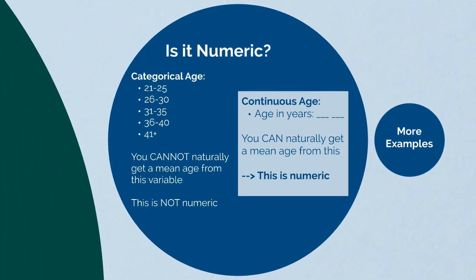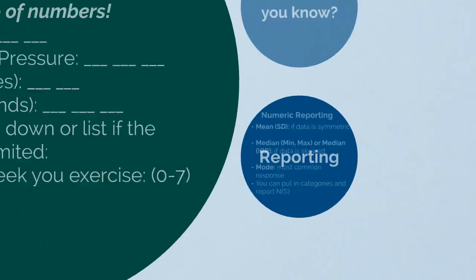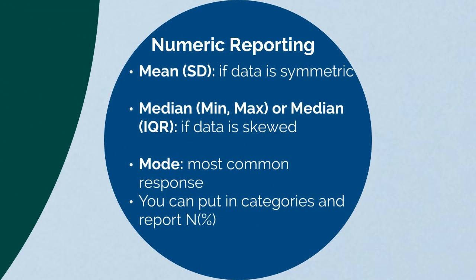Is it numeric? How do you know? Think about what you need from your variables. Do you need a mean value or standard deviation? Then it is a continuous numeric variable. When reporting these, you can report a mean and standard deviation if the data is symmetric, or a median with min/max or interquartile range if the data is skewed. You can report the mode — the most common response. You can also take numeric variables, put them in categories, and report the N and percent, such as the percentage of people over age 50.